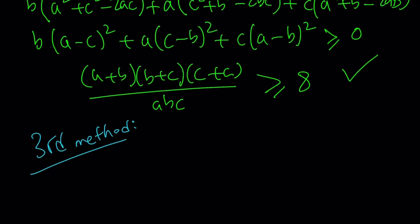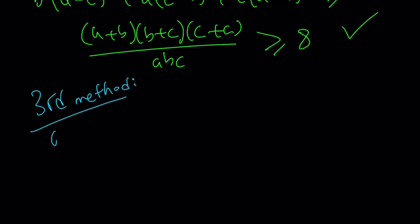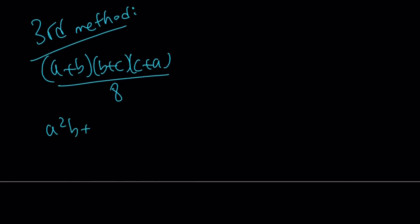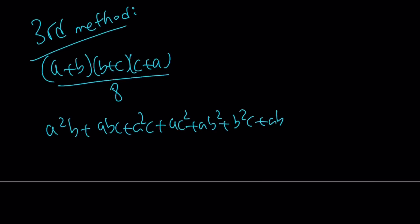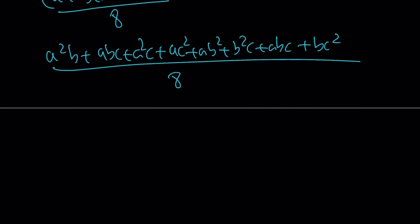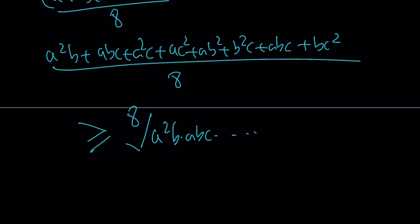For the third method, I just want to show the idea without going all the way through. We consider the expression (A plus B)(B plus C)(C plus A) over 8. Distributing gives: A²B plus ABC plus A²C plus AC² plus AB² plus B²C plus ABC plus BC², all over 8. There are 8 terms in the numerator. Applying the AM-GM inequality, this is greater than or equal to the geometric mean of all eight terms, which works out to give ABC, thus proving the original claim.